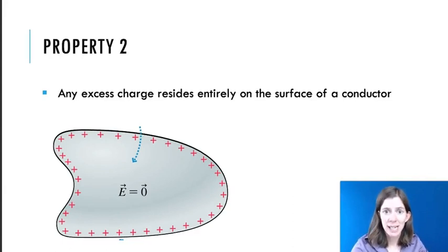Let's look at the second property. Any excess charge resides entirely on the surface of the conductor. This is very closely related to the first property. If you had charges not on the surface, they would repel each other and they would start moving. So they're going to always end up accumulating on the surface.